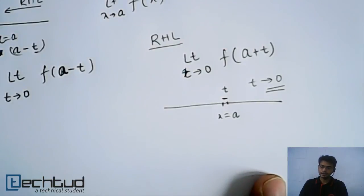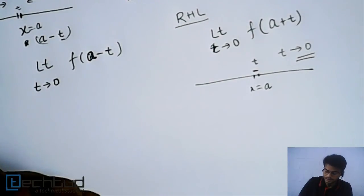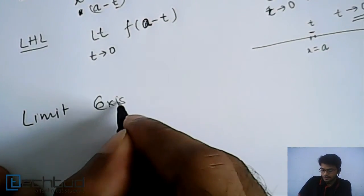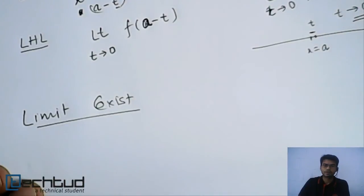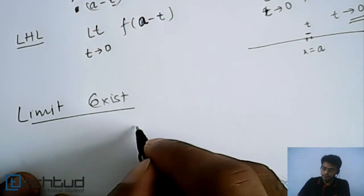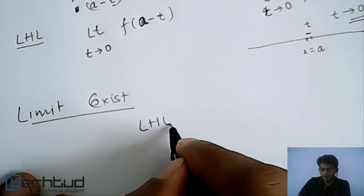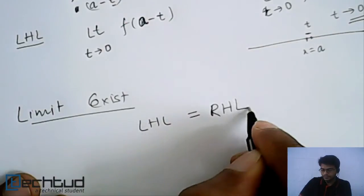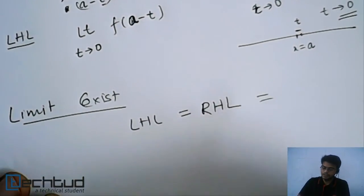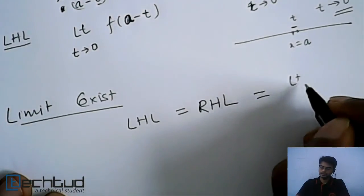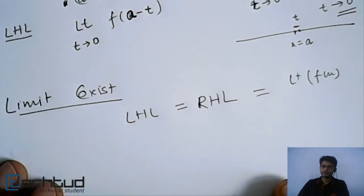So we say limit exist. We say that limit of a function at a particular point exist only if LHL, that is left hand limit, equal to right hand limit. And this will be equal to basically limit of the function.